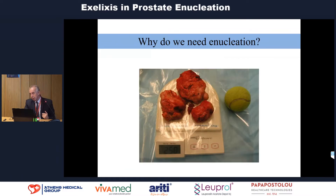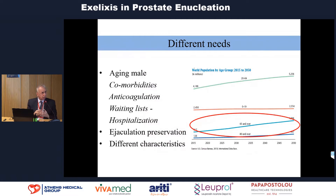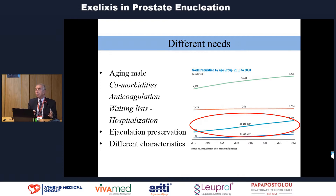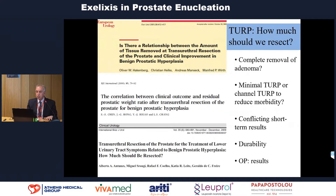Why do we need enucleation? We have different subpopulations of patients: patients who are older with severe comorbidities, usually under antithrombotics, which can result in a long waiting list and prolonged hospitalization. We also have very fit patients who want durable results and are very much interested in preserving their ejaculation. And we have patients with different characteristics — big or small prostates. The eternal question is how much tissue we should resect: should we completely remove the adenoma, or is a minimal or channel TURP more than enough with the extra bonus of reduced morbidity?